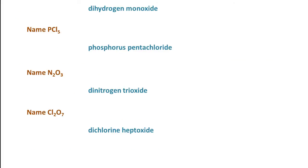Let's name a few others. Here we have water. There are two hydrogens, so we use the prefix di — dihydrogen. Then we have one oxygen atom, so we use the prefix mono. We drop the o because oxygen begins with a vowel, and we change the ending to -ide, giving us monoxide. So we have dihydrogen monoxide. That is the IUPAC name for water.